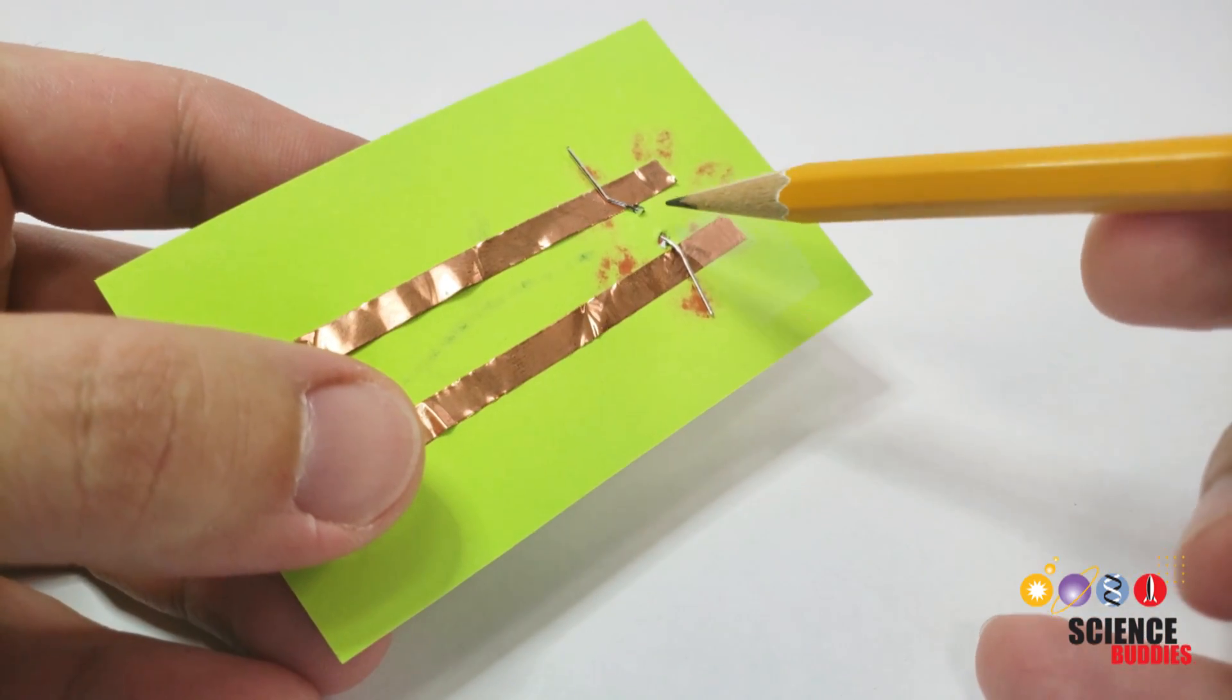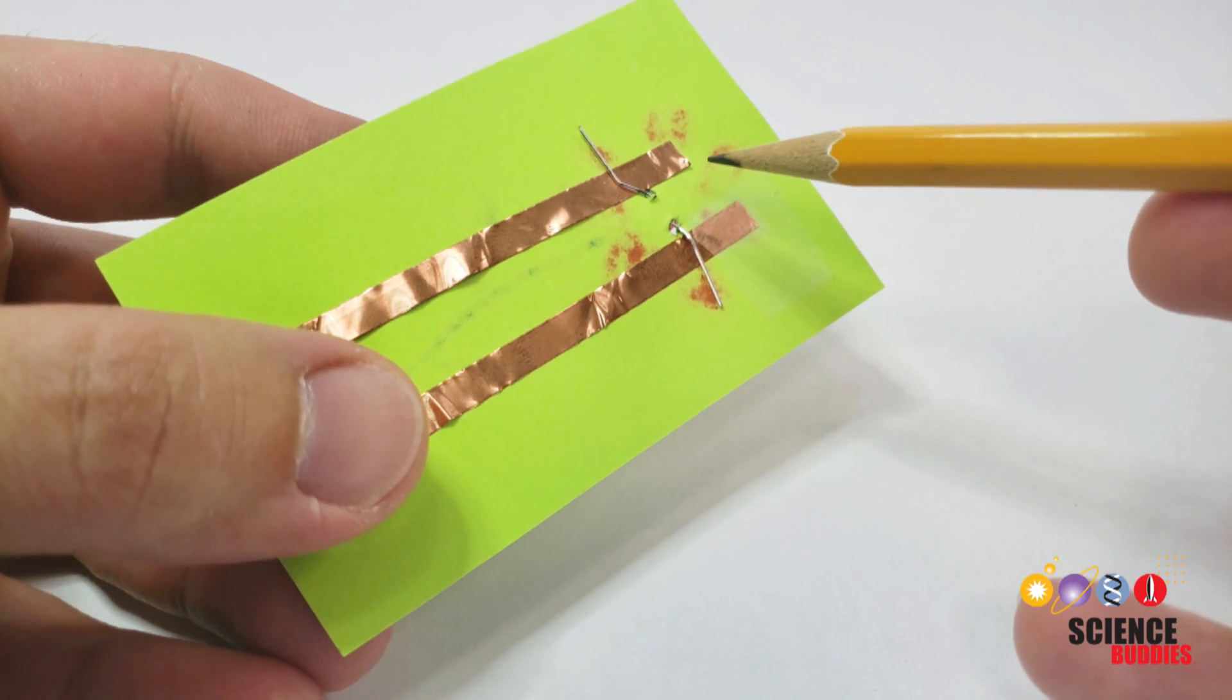If I flip it over, you see that it's the same circuit I had before with the legs of the LED poking through and bent over to contact the copper tape.